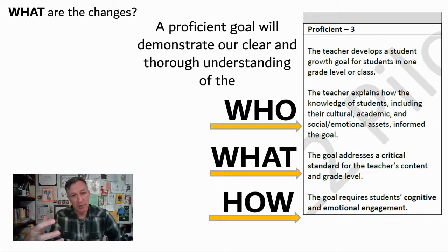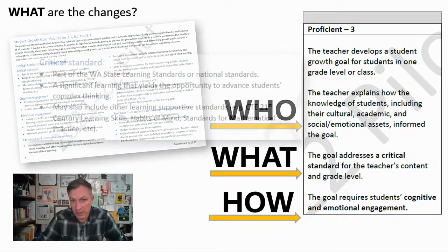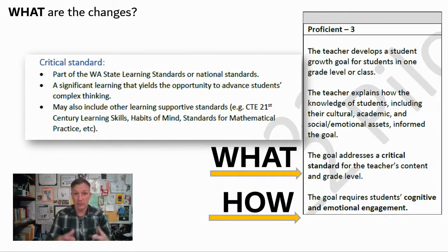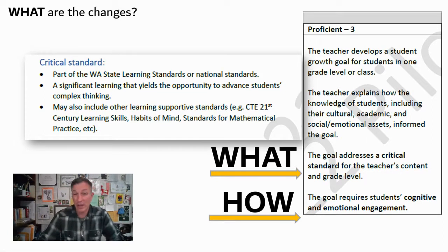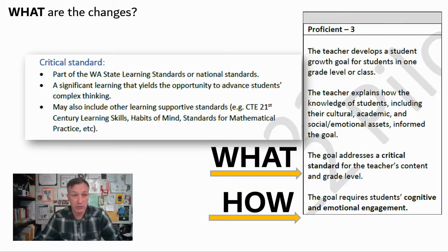As part of the rollout of these rubrics, OSPI included a document that identifies what some of these important terms mean. A critical standard is identified as part of a state or national learning standard, or something that is significant learning that gives kids an opportunity to advance complex thinking. It could also include other learning supportive standards, like 21st century CTE learning skills, habits of mind, standards of mathematical practice. So it isn't limited only to specific discrete content standards — if there's something you're monitoring that supports student growth, that can be part of how you define the critical standard.